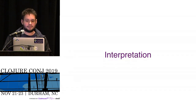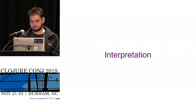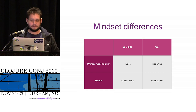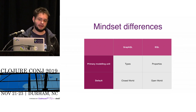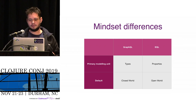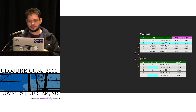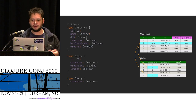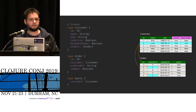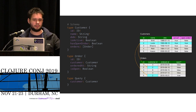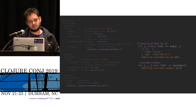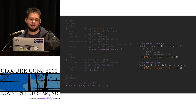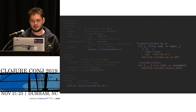Now let's talk about interpretation — how we process these queries. Some mindset differences: in GraphQL we have types; in EQL we have properties. GraphQL is a closed world; EQL is more open. Let's see how GraphQL would interpret a query. Using Lacinia — the most popular GraphQL implementation in Clojure — you write a schema, define resolve keys, and map those keys to functions. That's how it runs.